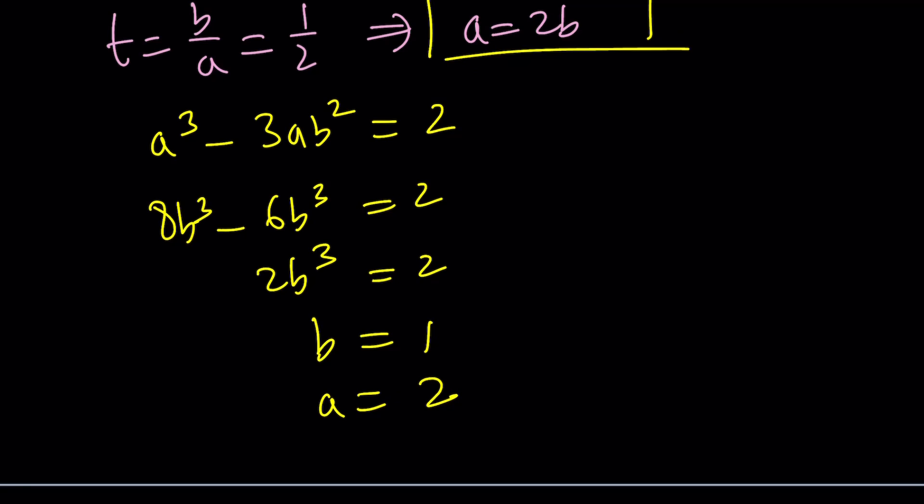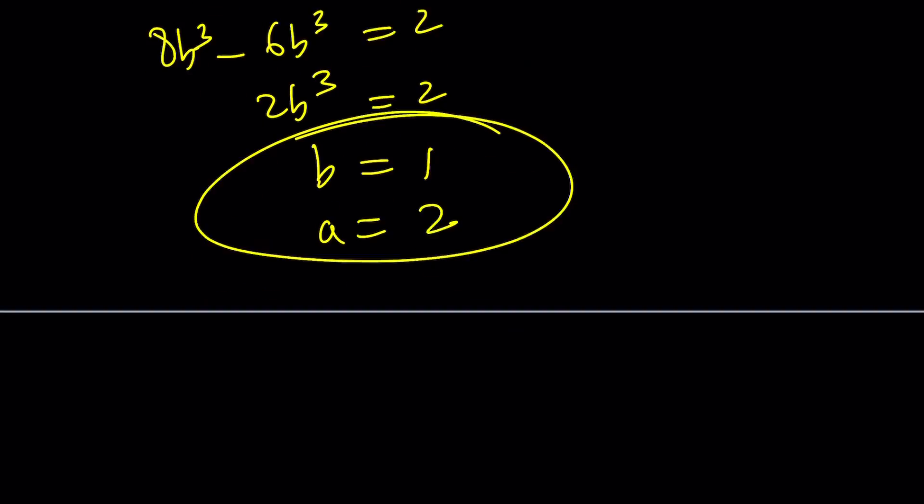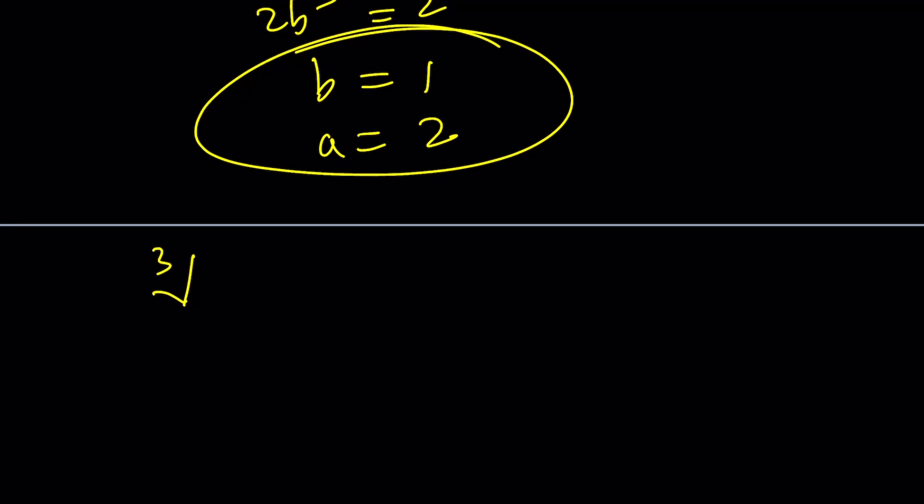So we get the values of A and B from here, and that way we can write one of the cube roots, which you could probably call maybe the principal cube root. I guess we could call this the principal cube root. But anyways, one of the cube roots is equal to 2 plus 1i, or just 2 plus i.